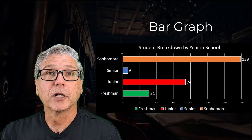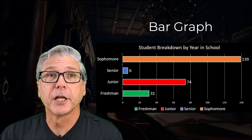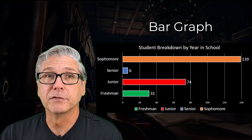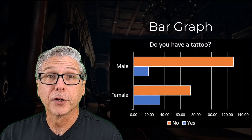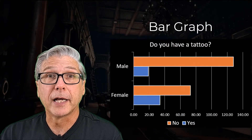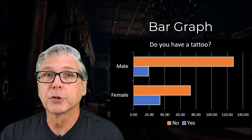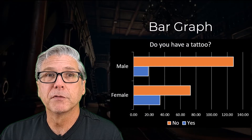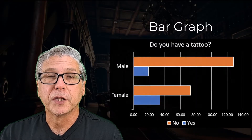Both pie charts and bar graphs give a visual representation of the qualitative data we've collected. Compare the graphs we looked at to the raw data we saw earlier and I think you'll agree that the graphs give us a much better idea of what the data look like.